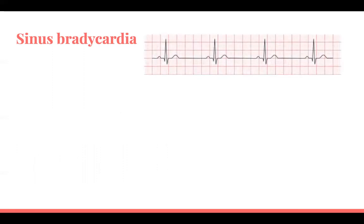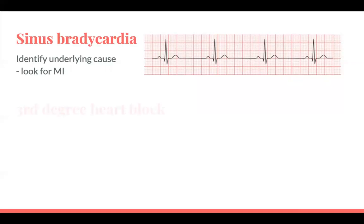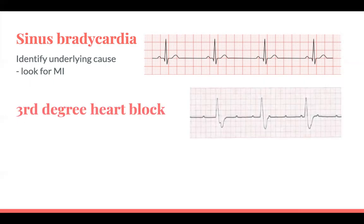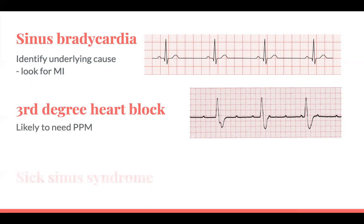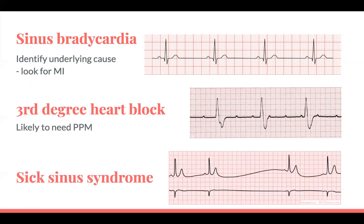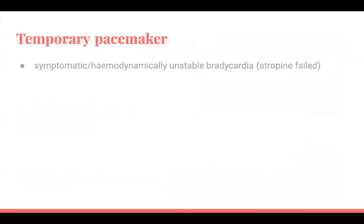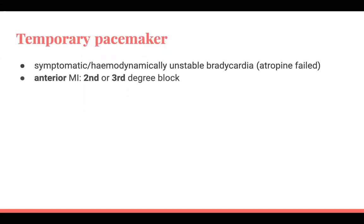Sinus bradycardia is one of the more common causes. Like sinus tachycardia, identify the underlying cause and check for MI — particularly anterior MI. Third degree heart block is likely to need a pacemaker. Sick sinus syndrome is persistent symptomatic bradycardia. Indications for a temporary pacemaker: symptomatic haemodynamically unstable bradycardia where atropine has failed; anterior MI with second or third degree heart block; and trifascicular block pre-surgery.